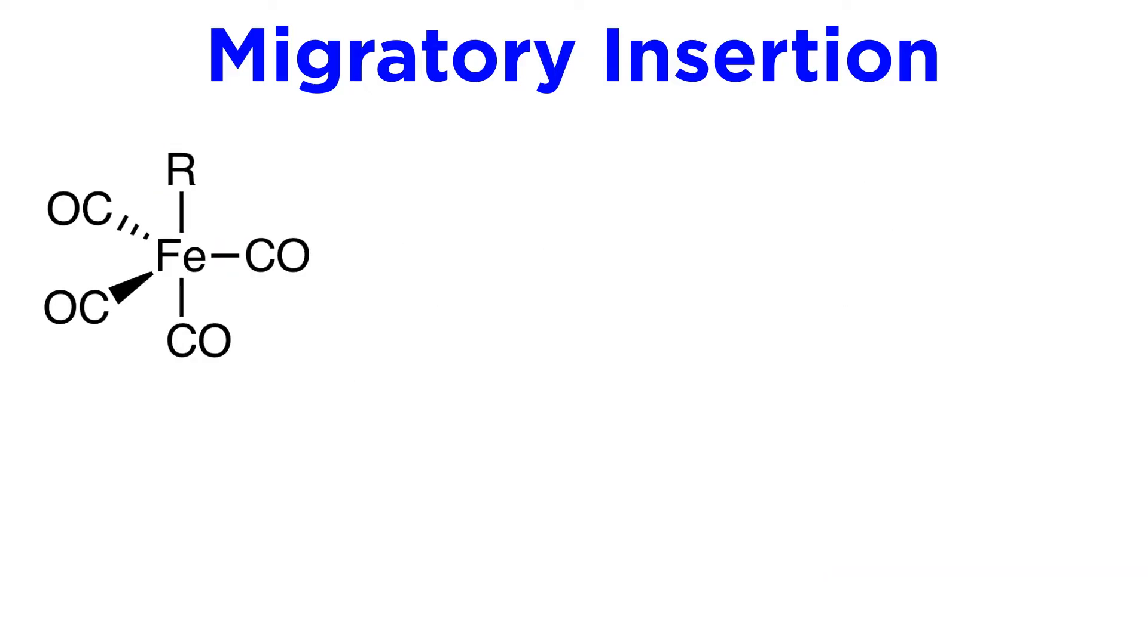Let's look at some simple examples. Here is an iron complex with four carbonyl ligands and one alkyl ligand. Any of these three carbonyl ligands in the equatorial plane would be capable of inserting into this metal-carbon bond, so let's move this one here, which gives us this new carbonyl-containing ligand.